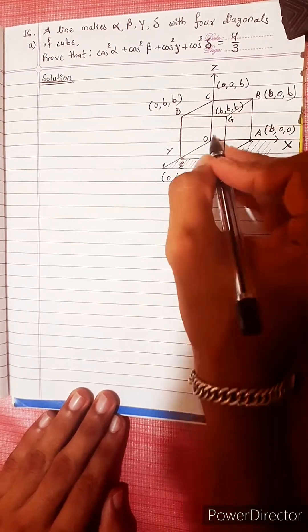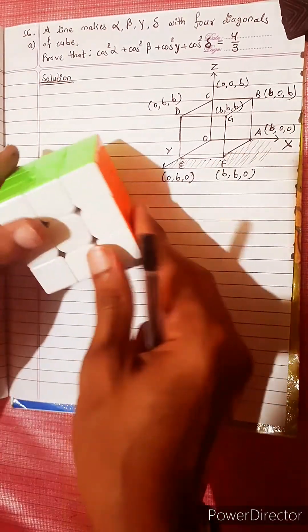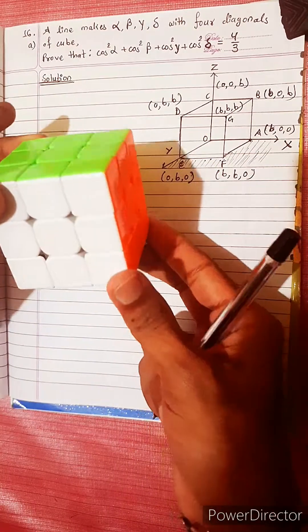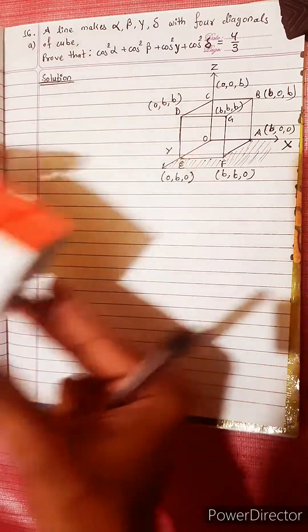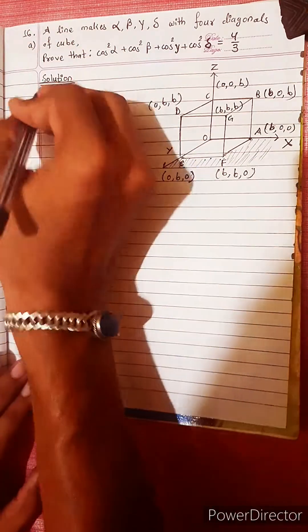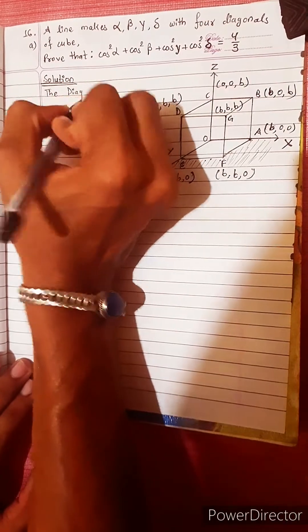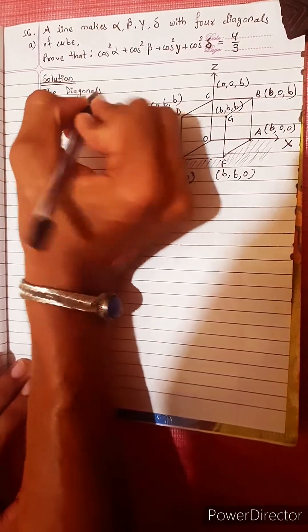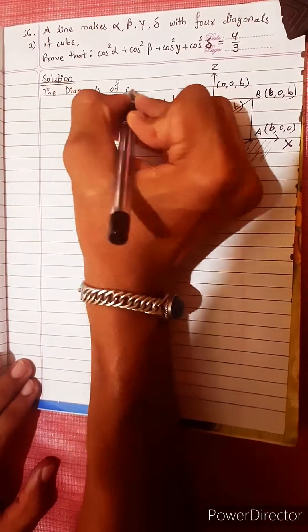This cube has a diagonal. This is a cross. This figure is the diagonal of the cube.